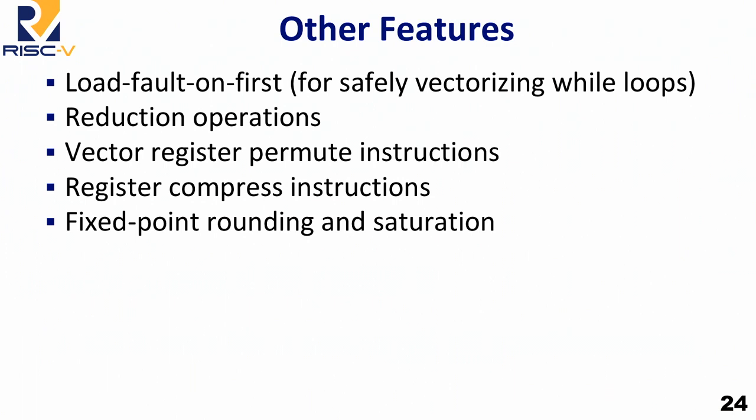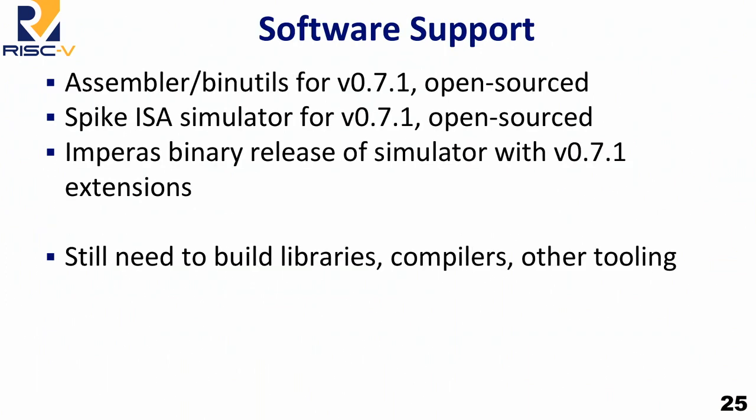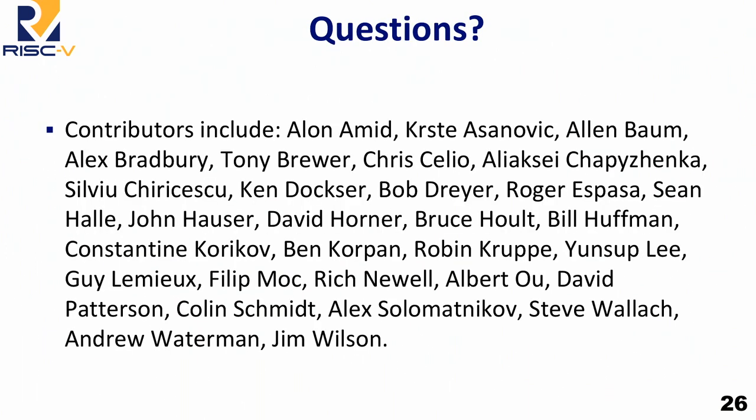There are a bunch of other features — fault-on-first for vectorizing while loops, reductions, compression — there's no time to go into all of this. The status is that the software is now available: binutils source code is out with vector instructions included, and Spike source code is out there. Empiris also did a binary release of the simulator. There's still a lot of work to do, but we've made a lot of progress. I just want to say a lot of people contributed to the design.